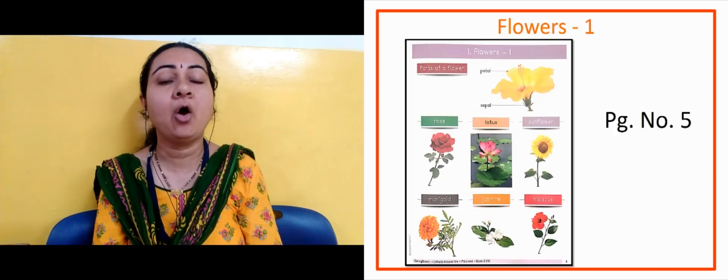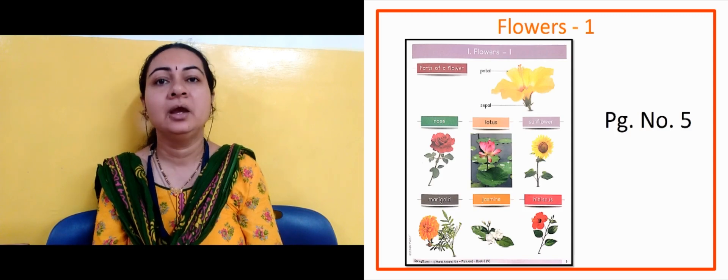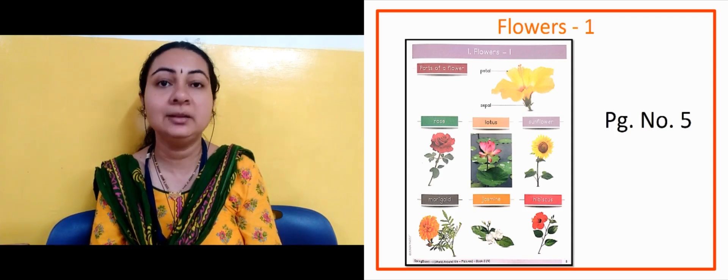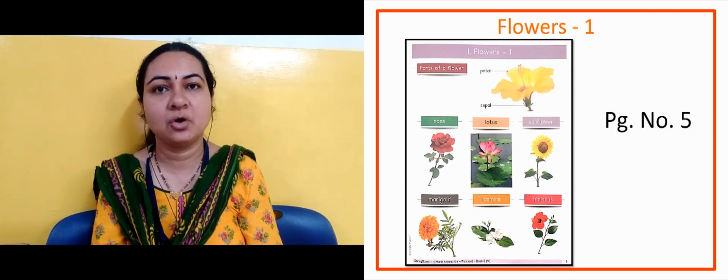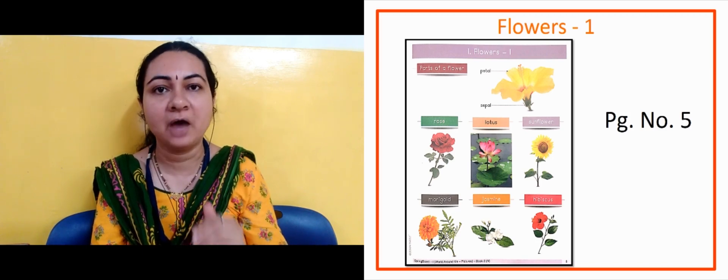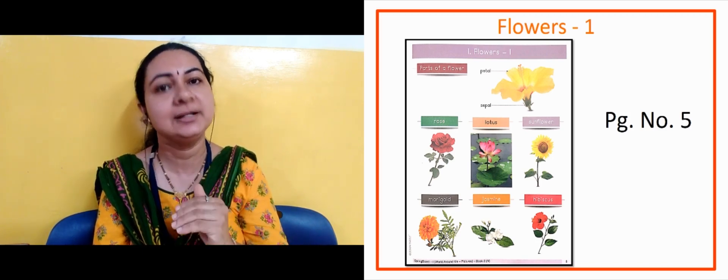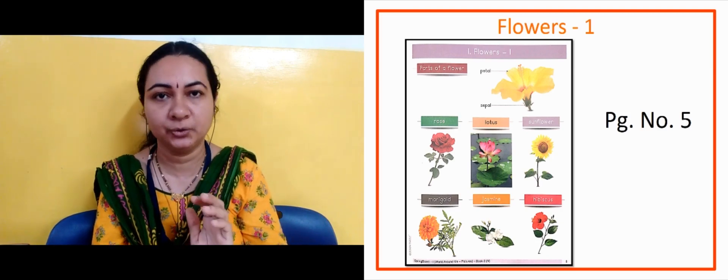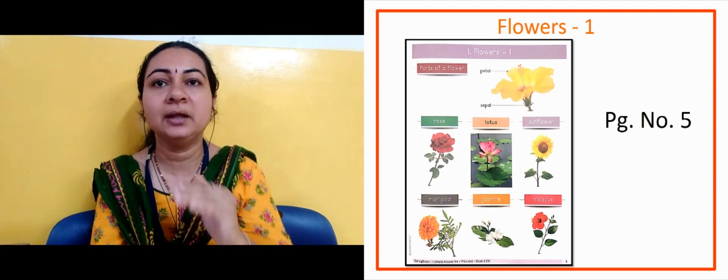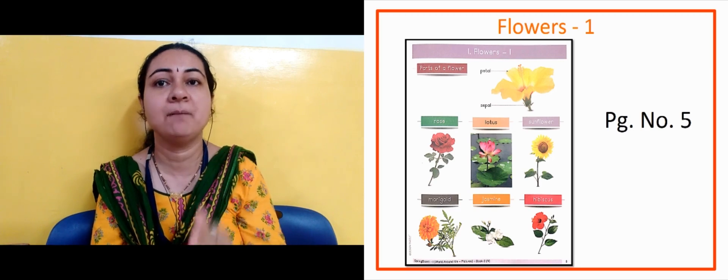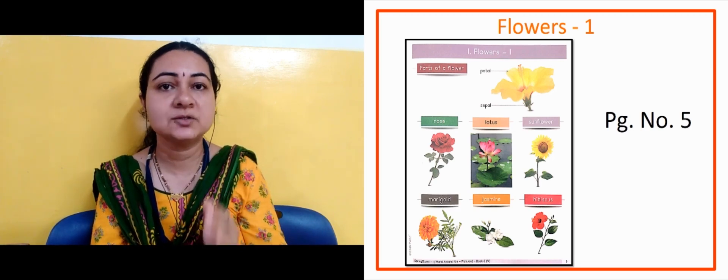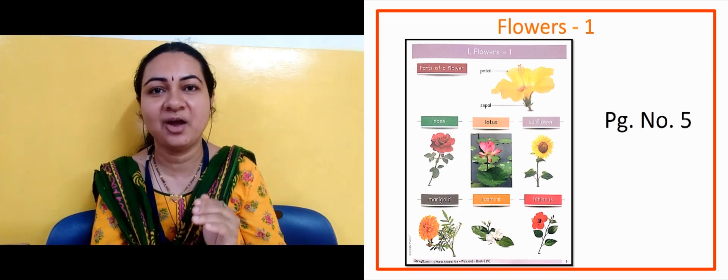The next slide is on flowers. We will look at the topic of flowers. Now the next slide is on page number 5, Flowers 1. In that we saw parts of the flower — petal and sepal. We also saw different types of flowers, for example rose, lotus. Lotus is our national flower.